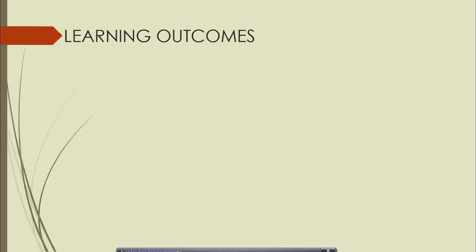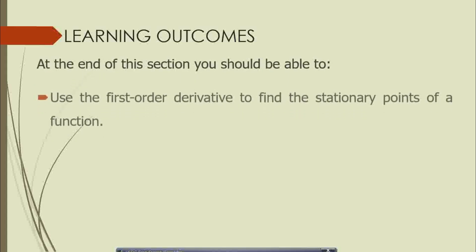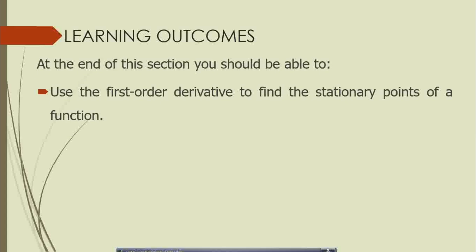There are some expectations for this session on optimization. At the end, you are expected to use the first order derivatives to find the stationary points of a function. For any given function you face in the future, you should be able to use the first order derivative to find those stationary points. The use of the first order derivative is what we call the first order condition.